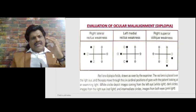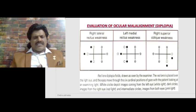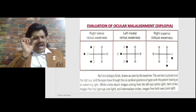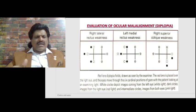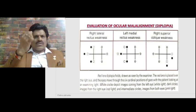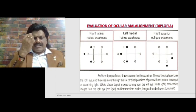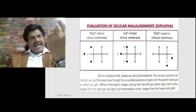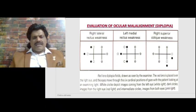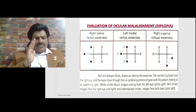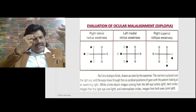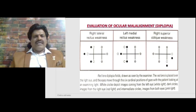In the red lens diplopia test, as seen by the examiner, the red lens — represented by the dark circle — is placed over the right eye. The eyes then move through the six cardinal positions of gaze while the patient looks at an examining light. The white circle depicts the image from the left eye, the dark circle the right eye (red light), and the intermediate circle images from both eyes (pink light).